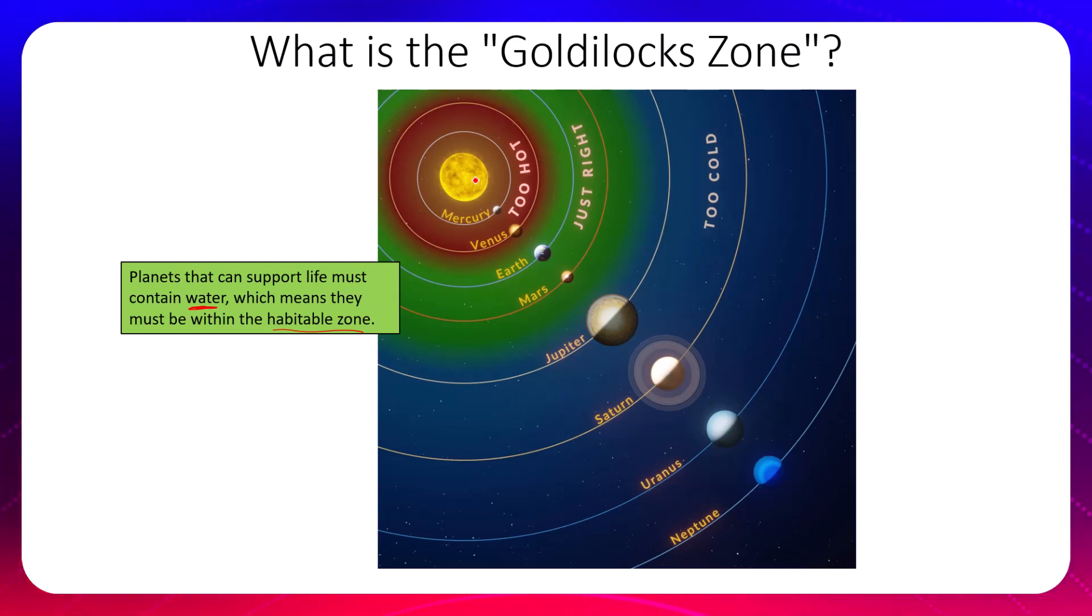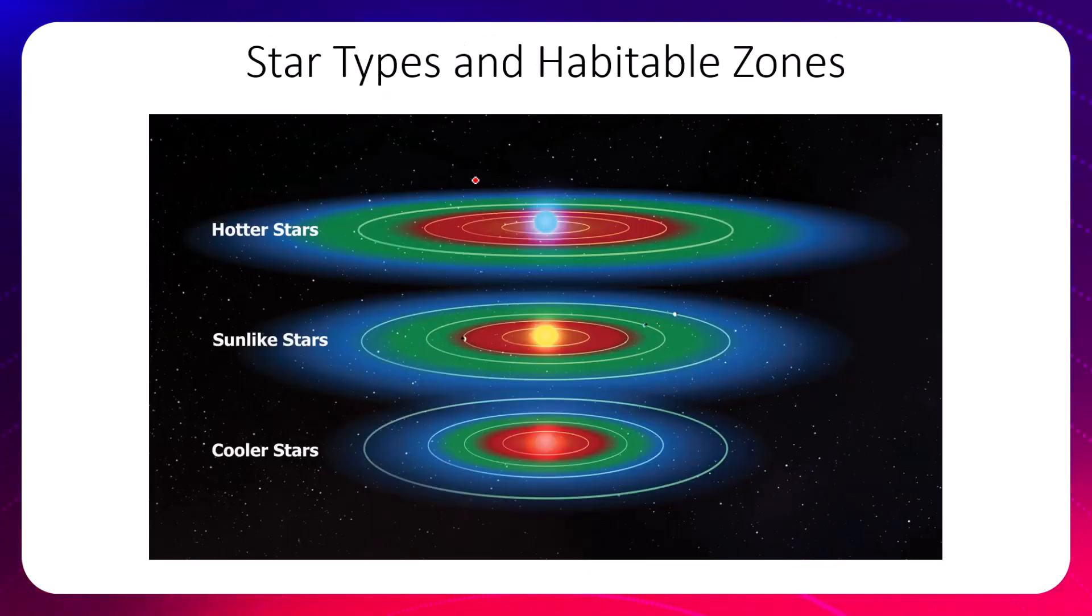So there are different star types and there are different habitable zones associated with those star types. We have in the middle Sun-like stars, this would be ours. We have a Sun, we have planets around the Sun, we have planets both inside of our habitable zone and we have planets outside of our habitable zone.